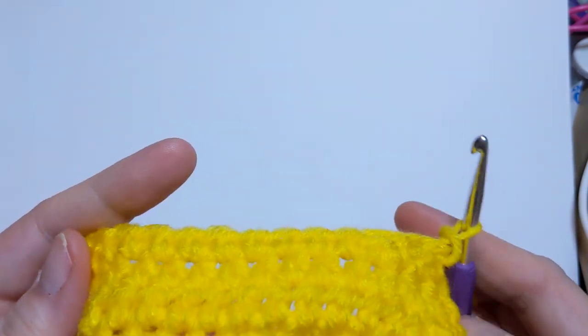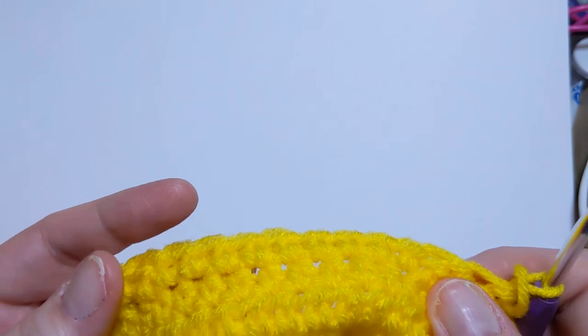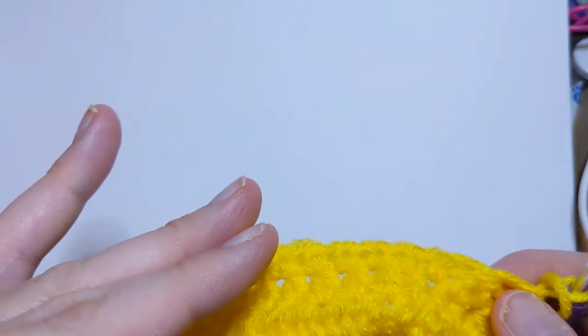Now, when you start getting down to this point, you need to make some decisions. I have 12. If I do two decreases on each side, that'd be 11, 10, 9, 8, that's too few stitches.